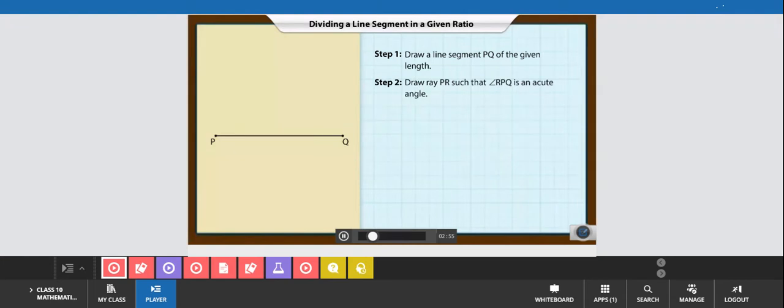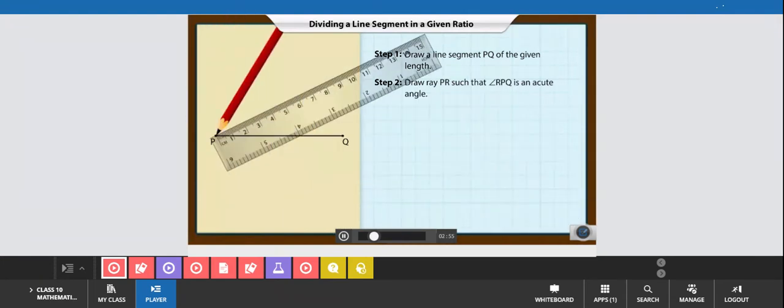Next, draw the ray PR making an acute angle with PQ.